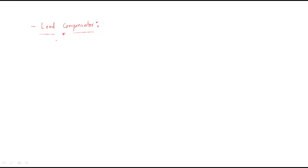Hello everyone. In this session, this is the continuation of the lead compensator. In the last session, we found out the transfer function of the lead compensator: V0(S) by Vi(S), that is output voltage by input voltage, is (1 + τS) / (1 + α·τ·S). So this is the transfer function we are getting.